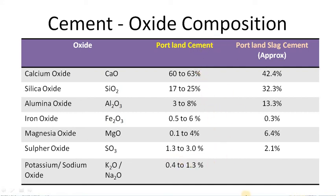Potassium or sodium will be 0.4 to 1.3%. If we change this proportion, the type of cement will change. For example, here is the composition of Portland Slag Cement — these are approximate values referred from multiple books. Calcium is 42.4%, silica is 32.3%, alumina is 13.3%, iron oxide is 0.3%, magnesia is 6.4%, and sulfur is 2.1%.